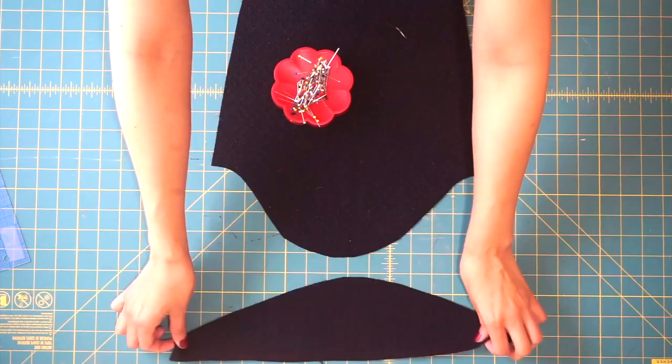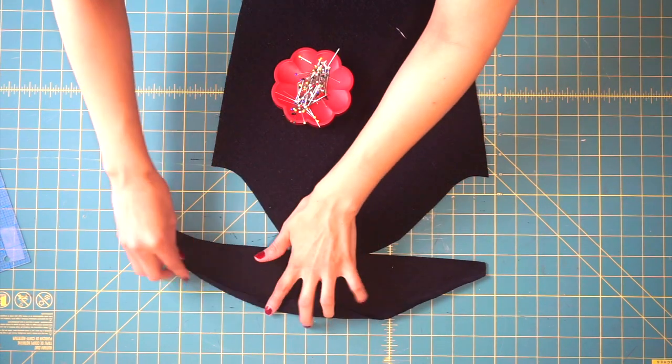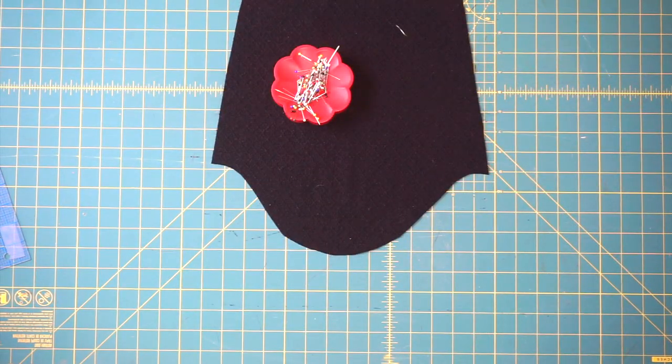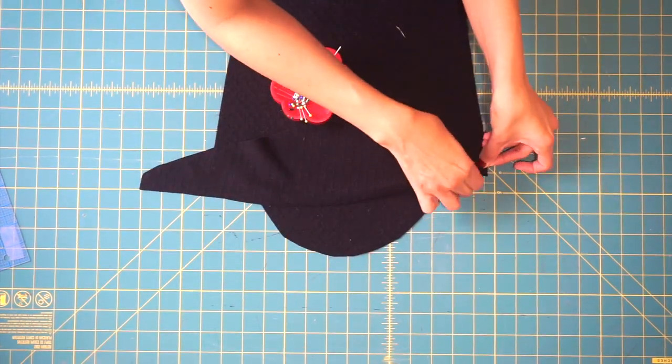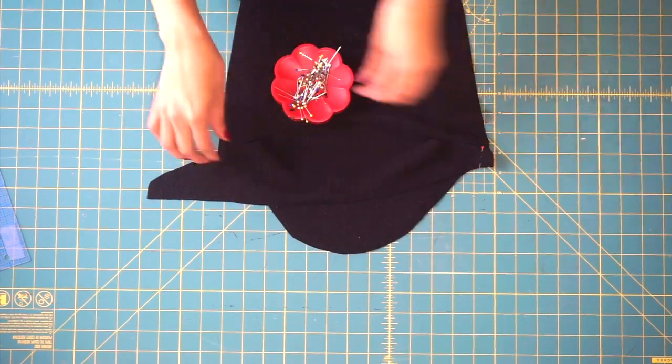Before we baste our sleeve hack to our sleeve, we need to hem the curved side of our sleeve. Finish that edge with the serger or your desired method and then turn that to the wrong side by a quarter of an inch. The curved edge of your sleeve hack needs to be hemmed before you pin this to your sleeve.